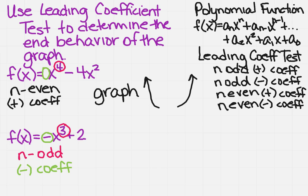So what I need to do is look at my chart or what I've already learned. I need to find something that's odd and has a negative leading coefficient. So it's going to rise on the left and it's going to fall on the right.